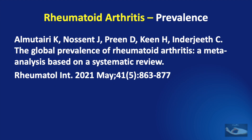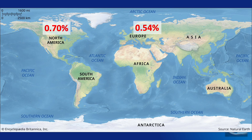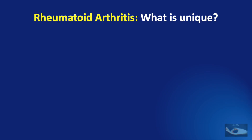The prevalence is not the same throughout the world. A meta-analysis done in 2021 showed varying prevalence across continents. The highest prevalence was in North America at around 0.7% of the population, followed by Europe at 0.54% and Africa at 0.52%. The least prevalence was seen in Asia and South America, where involvement was around 0.3%.